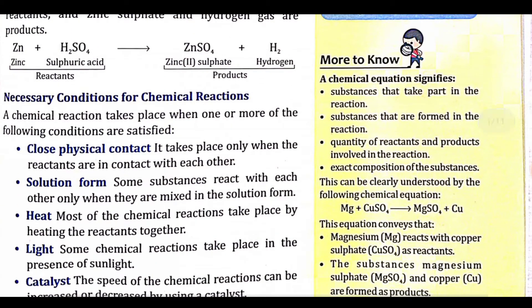A chemical equation signifies: what substances take part in the reaction (reactants), what substances are formed (products), the quantity of reactants and products involved in the reaction, and the exact composition of each substance — how many molecules of each are taken. These are all things that a chemical equation shows.